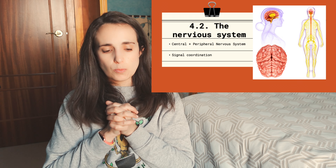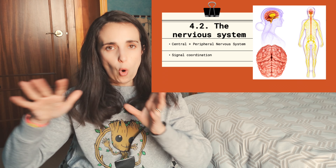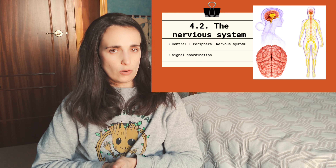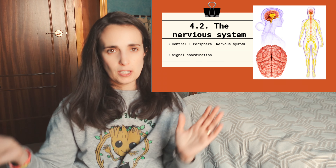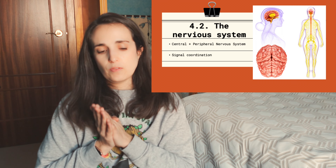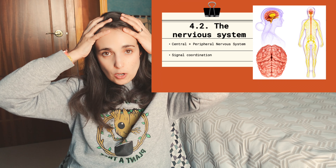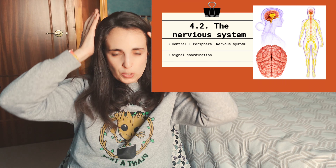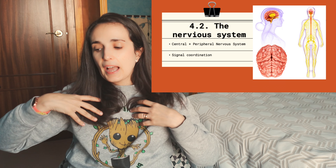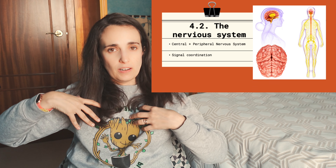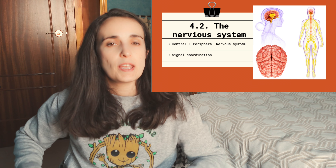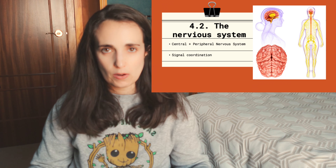Of course, the nervous system is a system, so it's made of organs and tissues — there are more things than neurons. We have the central nervous system, which is what we commonly call the brain, and the peripheral nervous system, which is all the nerves, the spinal cord, and everything all around the body. They all have a function in the interaction function.